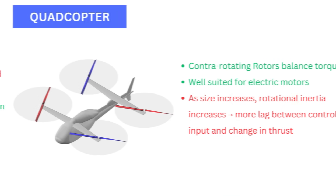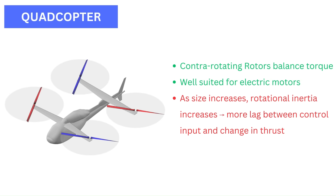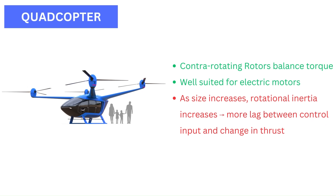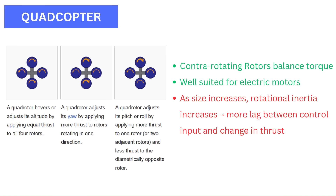The quadcopter type was impractical for gas-powered engines, but it is well-suited for electric motors. This type typically has four fixed-pitch propellers attached to electric motors. By varying the speed of the propellers, pitch, roll, and yaw control can be achieved.